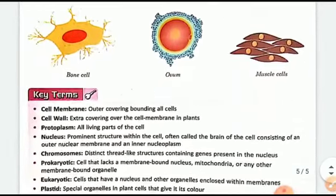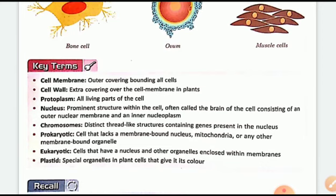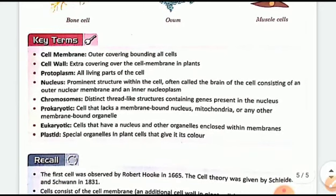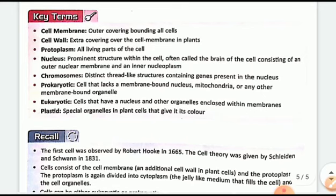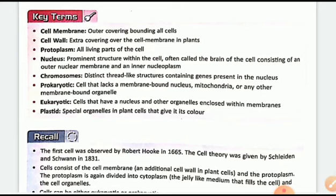Key terms: cell membrane — outer covering bounding all cells; cell wall — extra covering over the cell membrane in plants; protoplasm — all the living part of the cell containing cytoplasm plus nucleus; nucleus — prominent structure within the cell, often called the brain of the cell, consisting of outer nuclear membrane and inner nucleoplasm; inside the nucleoplasm there is the nucleolus and nuclear reticulum which is chromatin; chromosomes — distinct thread-like structures containing genes present in the nucleus.